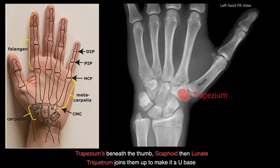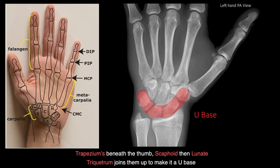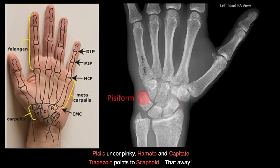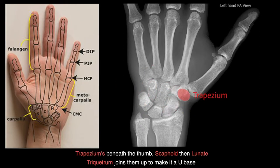Trapezium's beneath the thumb, scaphoid and lunate. Triquetrum joins them up to make it a U-base. Pisiform under pinky, hamate, capitate. Trapezoid points to scaphoid — that-a-way.